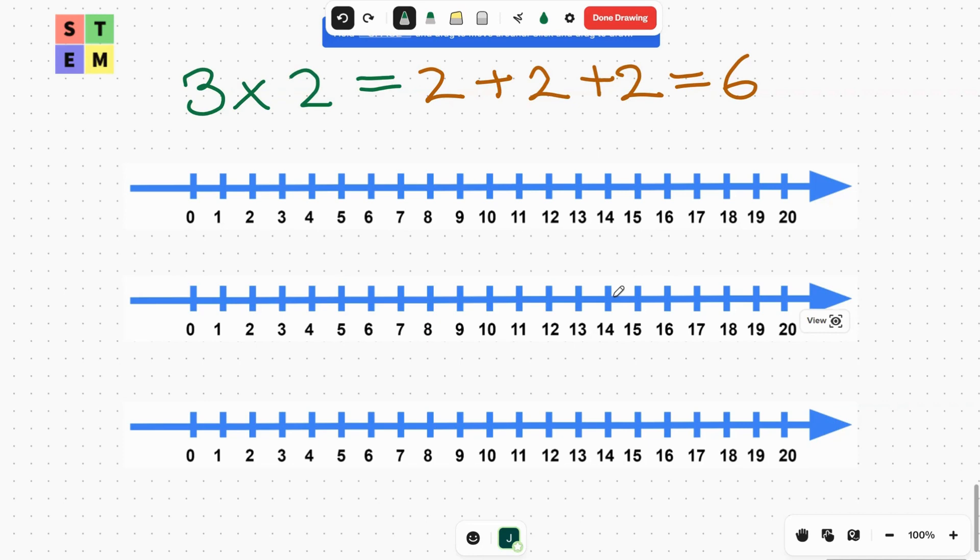We have one two, two twos, and three twos. So basically, we get 6 here. That's how we get 6. Let's try another example.